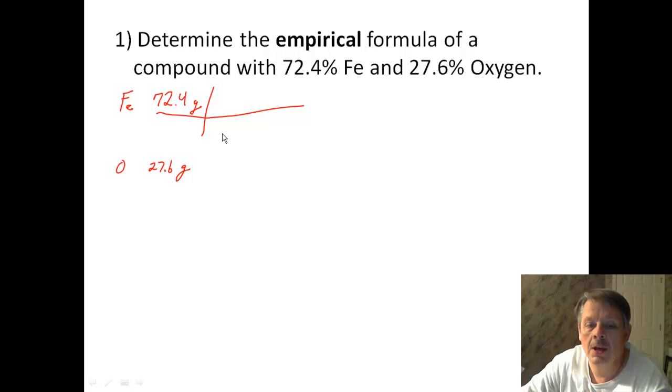Alright, and what we want to do is we want to get rid of the grams of iron. Because that's what we're talking about. 55.847. And that's grams of iron in one mole of iron. Alright, so this will give us a number that's moles. And this is 1.30 moles.